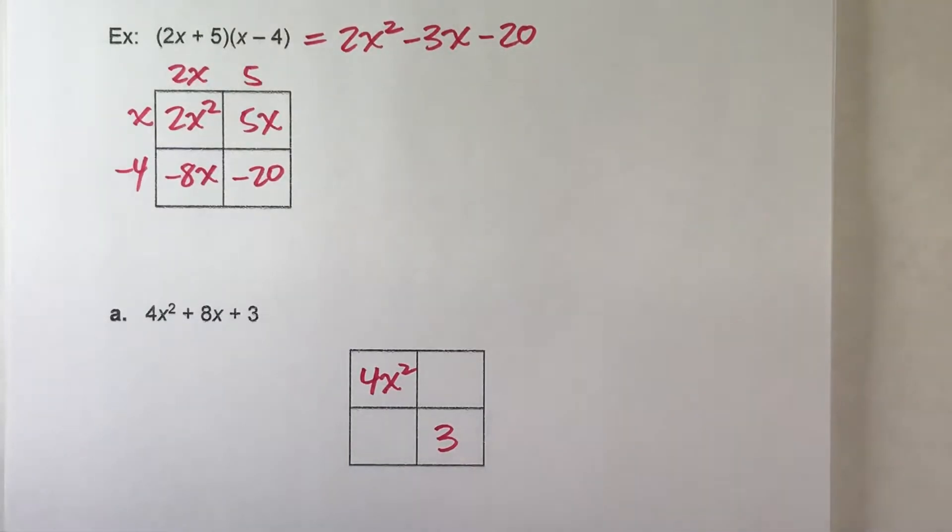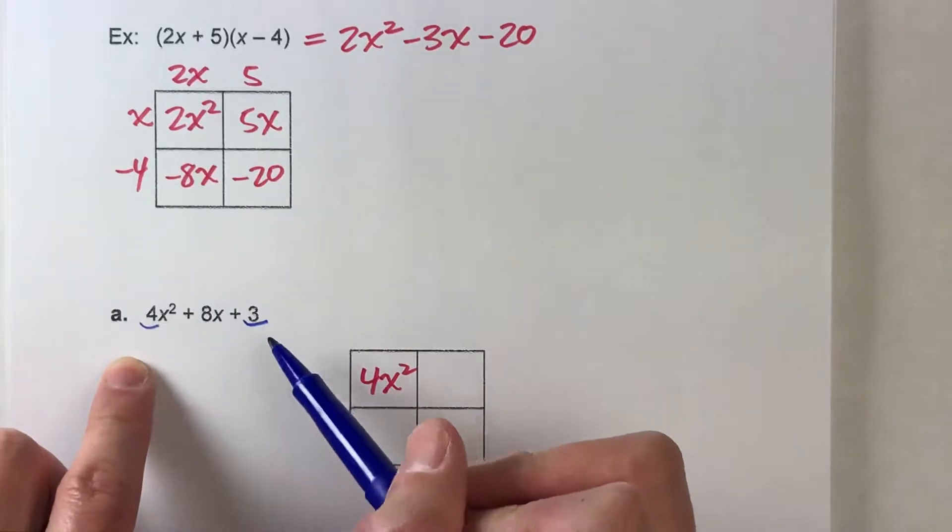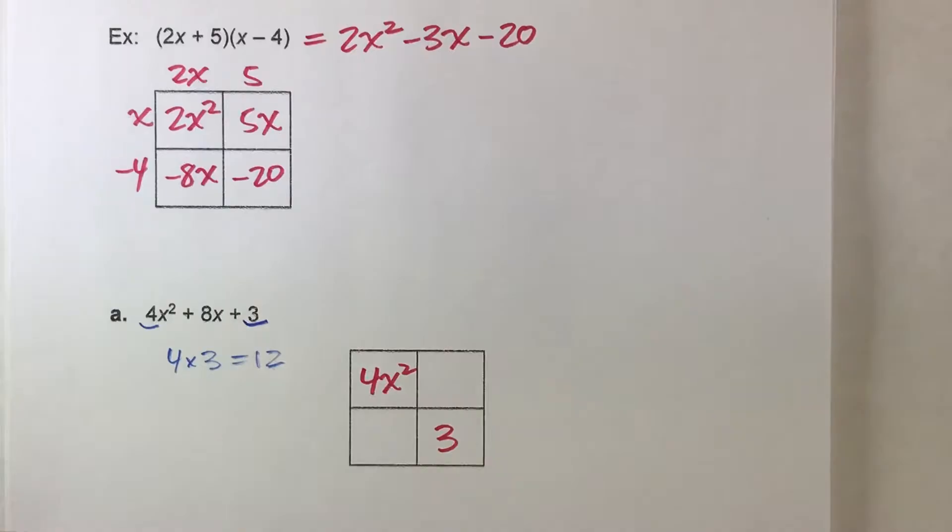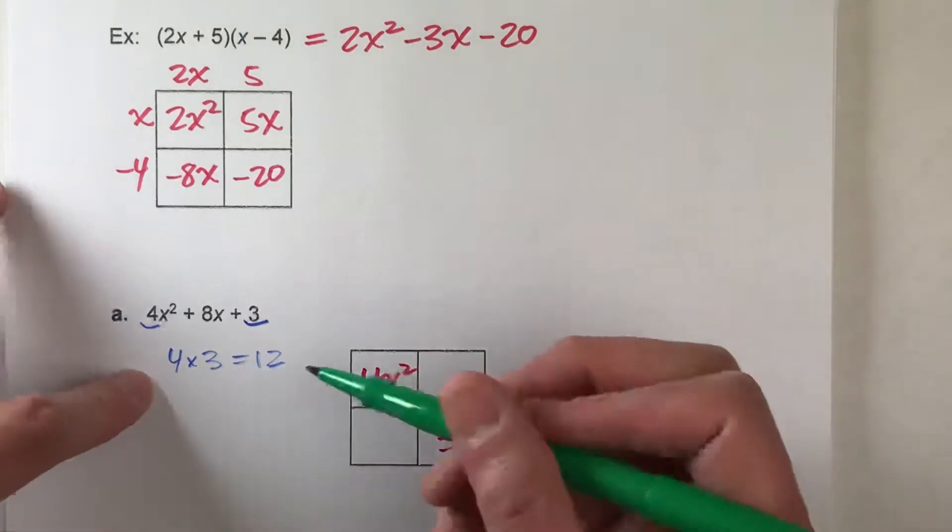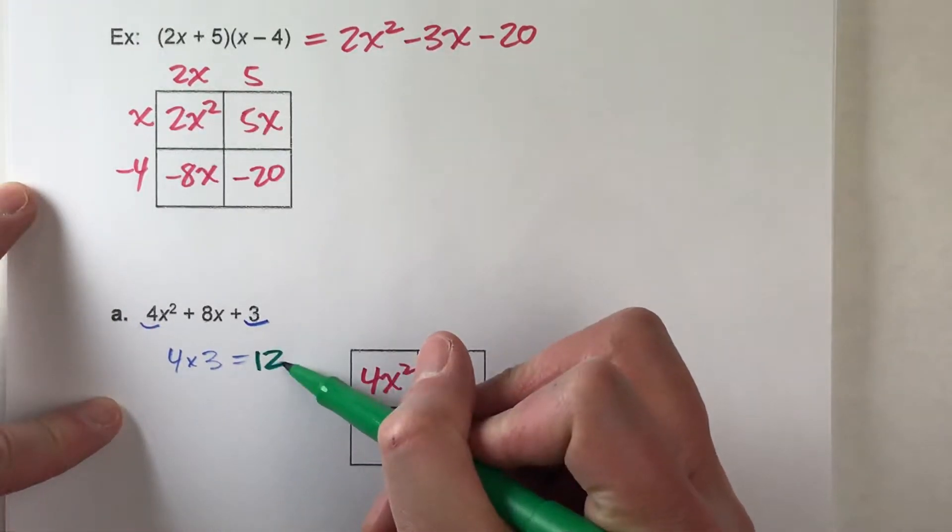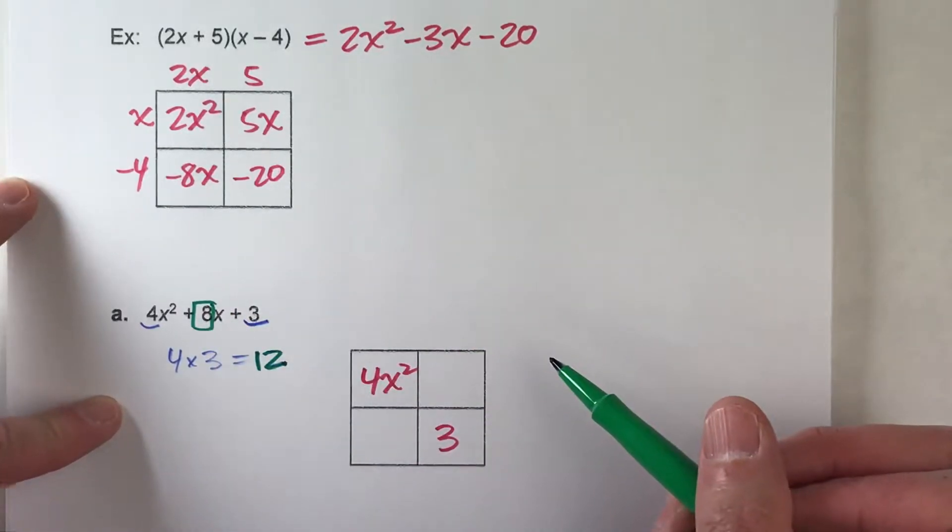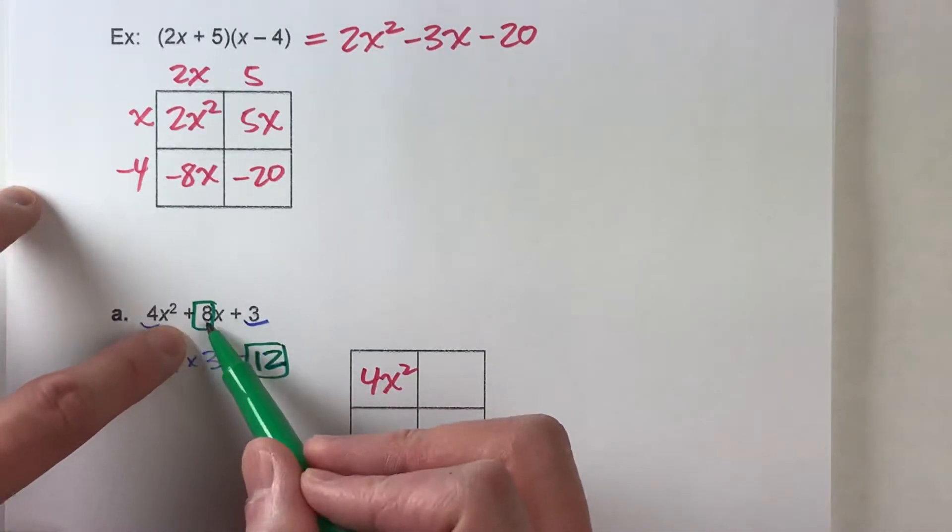And here's the trick to it. What we do is take this number and this number and multiply them together. So we get 4 times 3 is 12. What we want to do is find two numbers that multiply to get 12, but they add to get 8. So two numbers that multiply to get 12, but add to get 8.